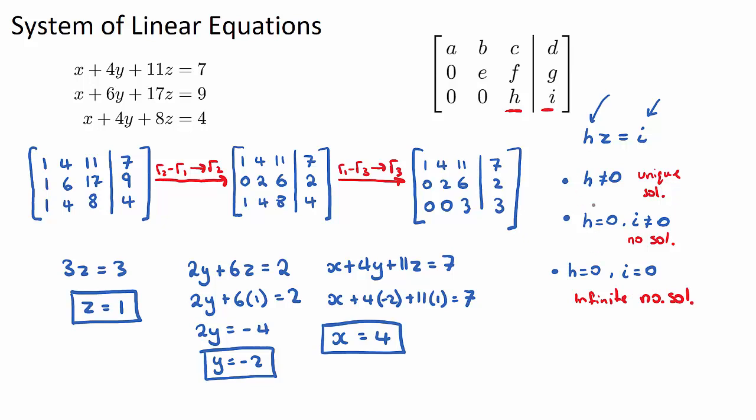So these are the three ones you want to look out for. After you've done your row reduction, just have a look at what the h and the i are, these last two numbers, and you can make some sort of conclusion out of what they are, out of these three possibilities. Okay, I recommend practicing a few of these questions, so good luck.